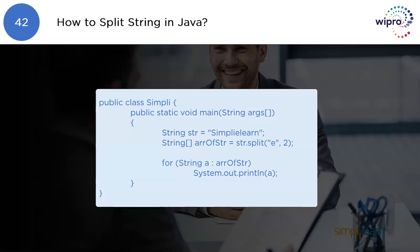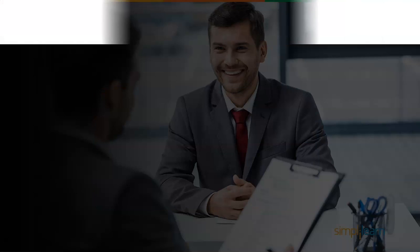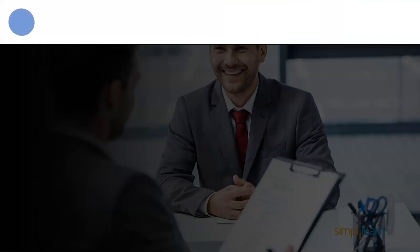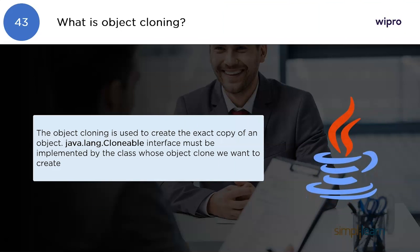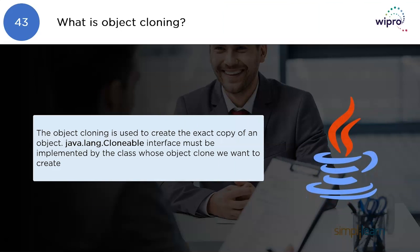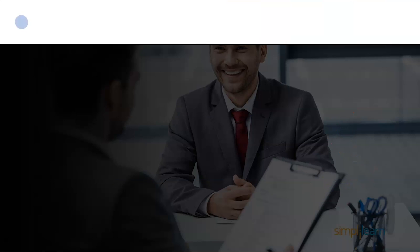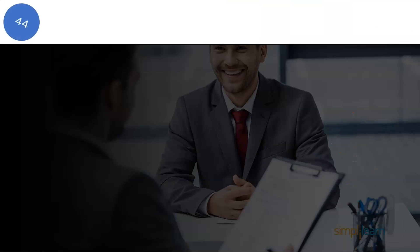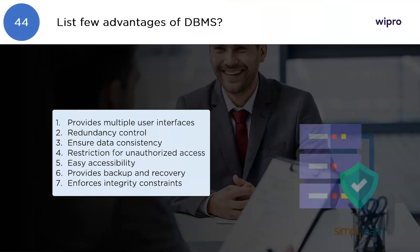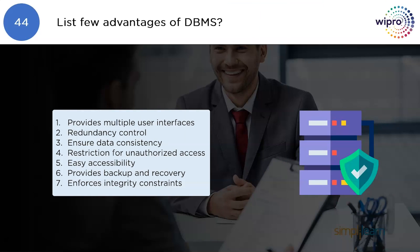What is object cloning? Object cloning is used to create the exact copy of an object. The Java.lang.Cloneable interface must be implemented by the class whose object clone we want to create.